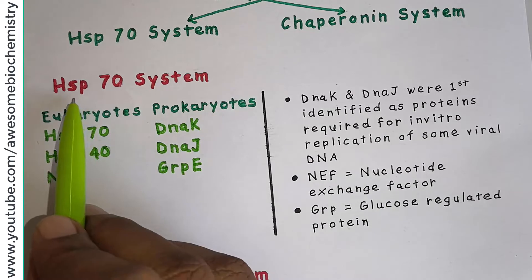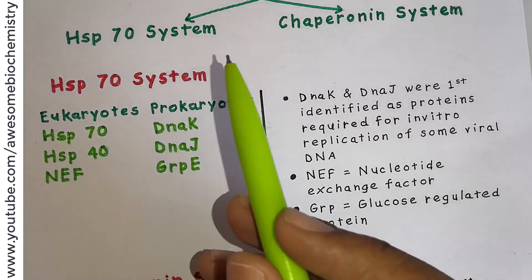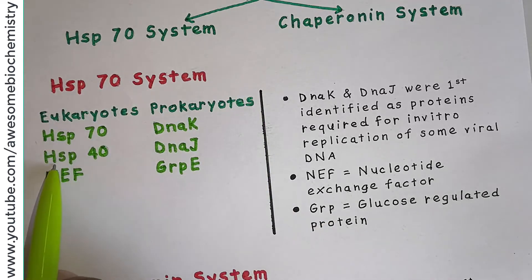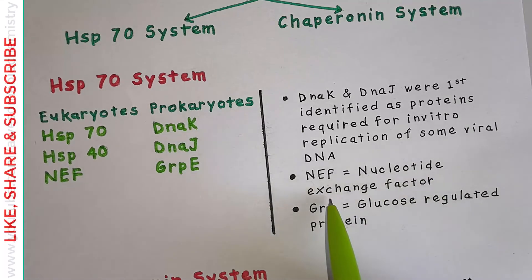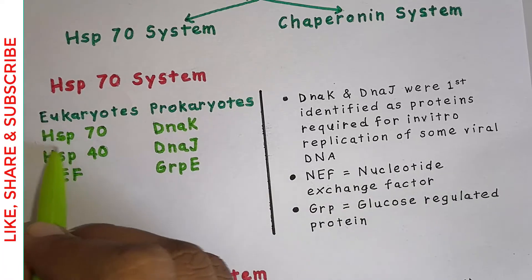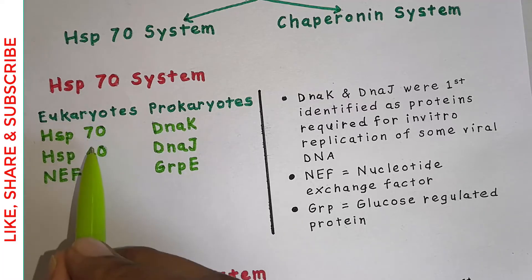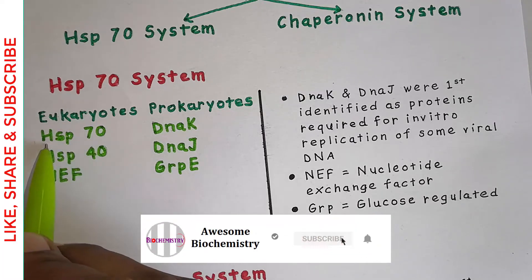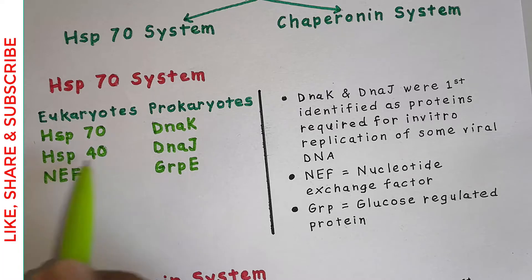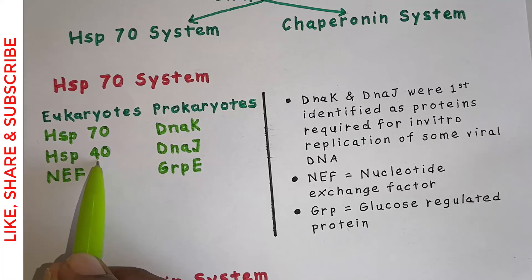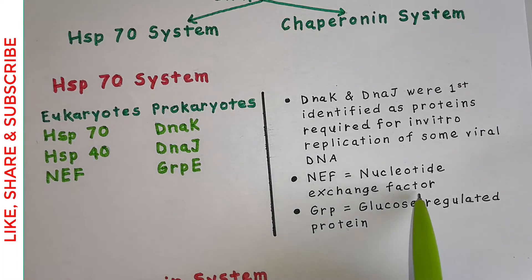In eukaryotes, the HSP70 system is made up of three different proteins: HSP70, HSP40, and NEF (nucleotide exchange factor). HSP stands for heat shock protein. The numbers refer to molecular weight: HSP70 is a heat shock protein with a molecular weight of 70 kilodaltons, HSP40 has a molecular weight of 40 kilodaltons, and NEF is the nucleotide exchange factor.